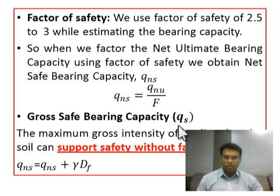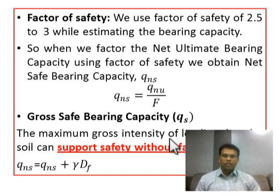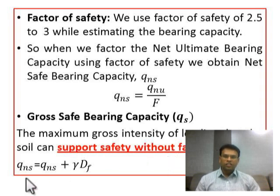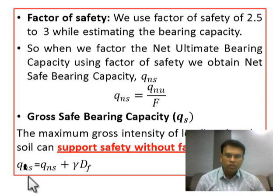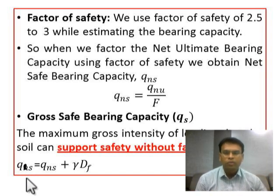Gross safe bearing capacity, Q_S, is the gross intensity of loading which the soil can safely support without failing in shear. Q_S = Q_NS + γ·D_F — that is, the net safe bearing capacity plus the loading intensity due to the overburden γ·D_F.